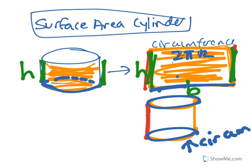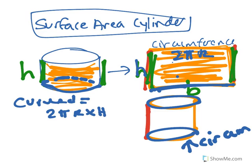2 pi r. And the height is h. Okay, so that curved surface area, the curved part of the cylinder, is equal to 2 times pi times the height, or 2 pi r h.